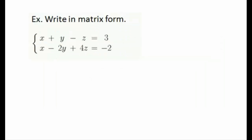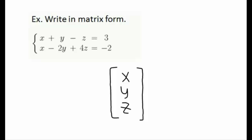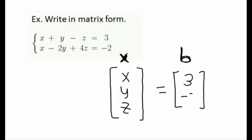Let's look at how this works. I'm going to write down the two easier matrices first and then work on matrix A last. The matrix bold x represents all three variables: x, y, and z. Next, bold matrix B represents the numbers on the right-hand side of the equal sign, so B contains the numbers 3 and negative 2.